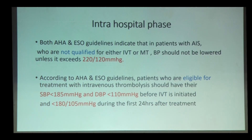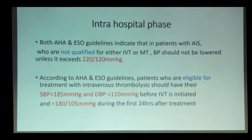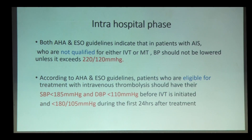Both AHA and European Society guidelines indicate that if a patient with acute ischemic stroke is not a candidate for thrombolysis or mechanical thrombectomy, BP should not be reduced unless it is more than 220/120 mmHg. If the patient is a candidate for thrombolysis or mechanical thrombectomy, BP before the procedure should be less than 185/110 mmHg, and post-procedure BP should be less than 180/105 mmHg for the next 24 hours.